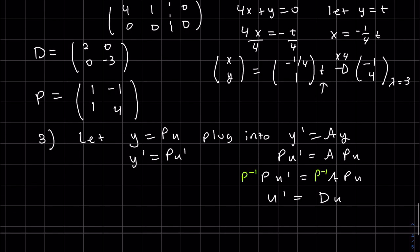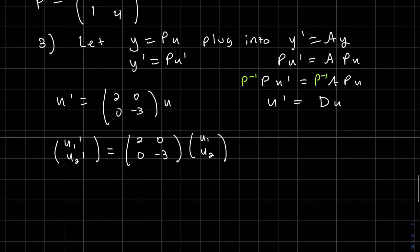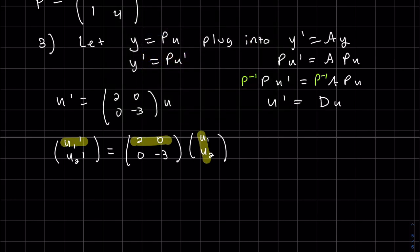So let's write this out. U prime is my diagonal times u. So really, this is u_1 prime, u_2 prime. If you want to write out your two equations so you can see it. So u_1 prime equals 2u_1. And my second equation is u_2 prime equals minus 3u_2.